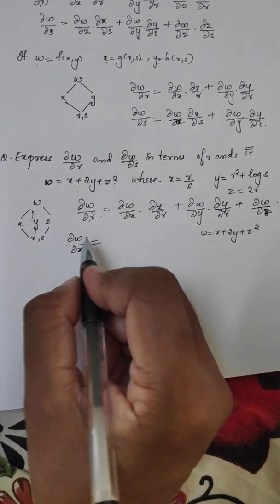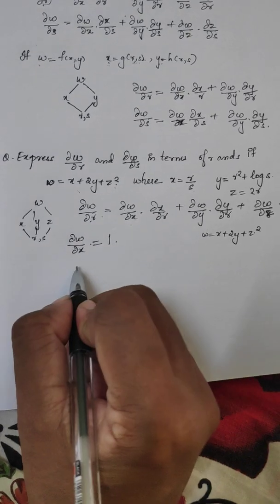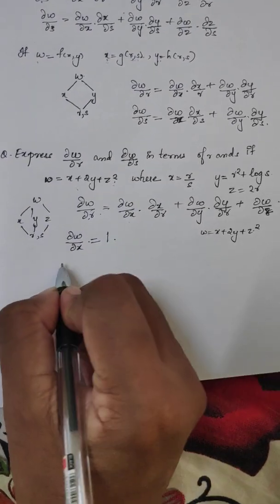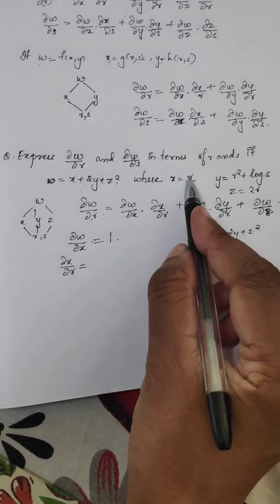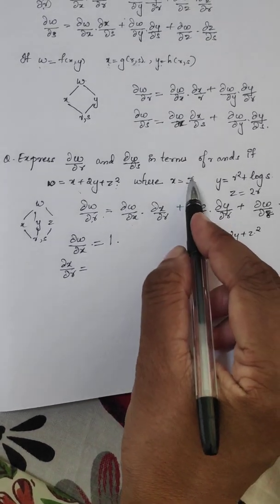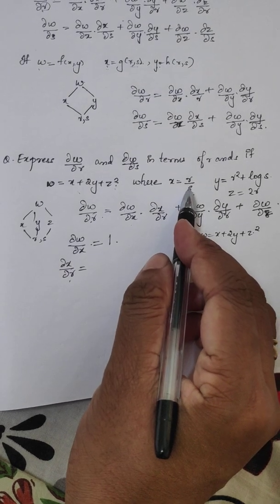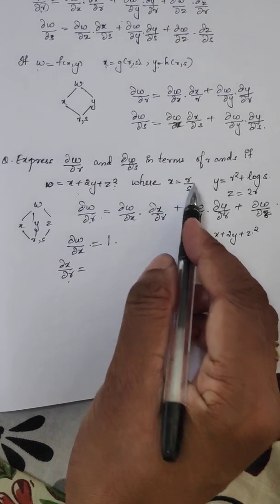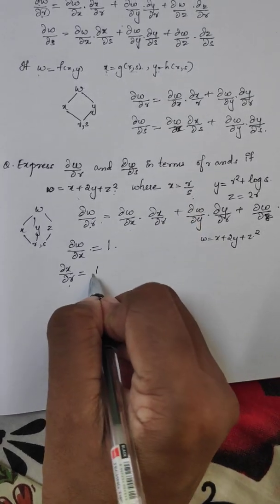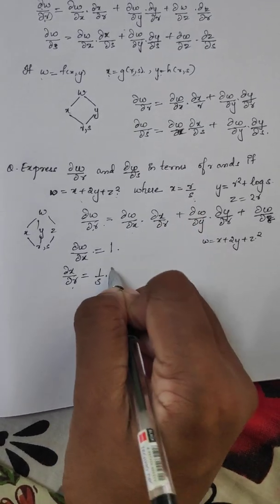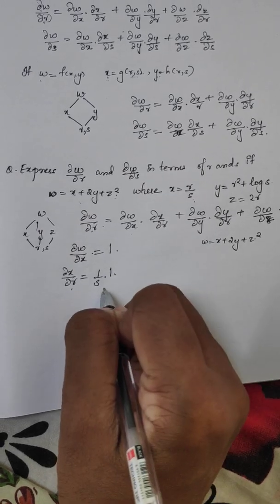So ∂w/∂r: first we compute ∂x/∂r. Here s is constant, so the derivative with respect to r gives us 1/s.